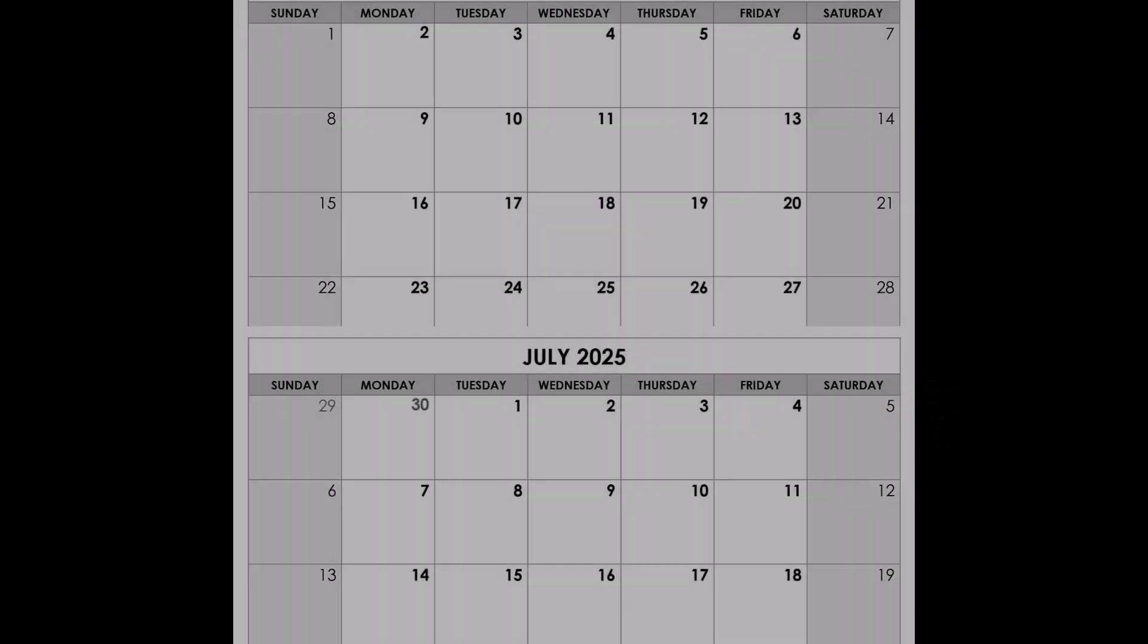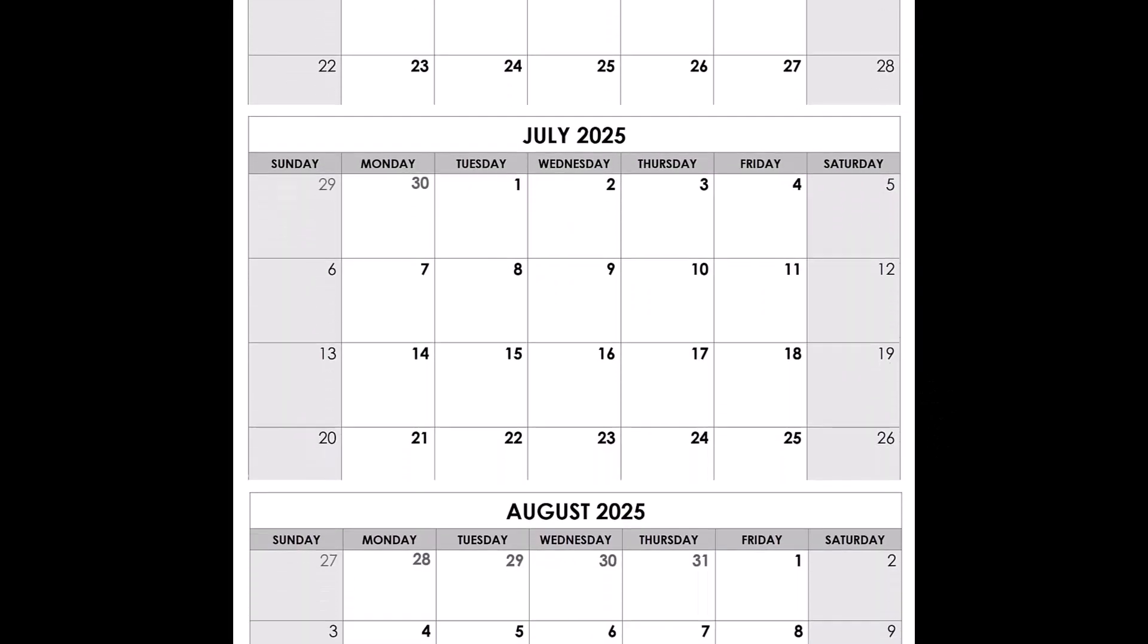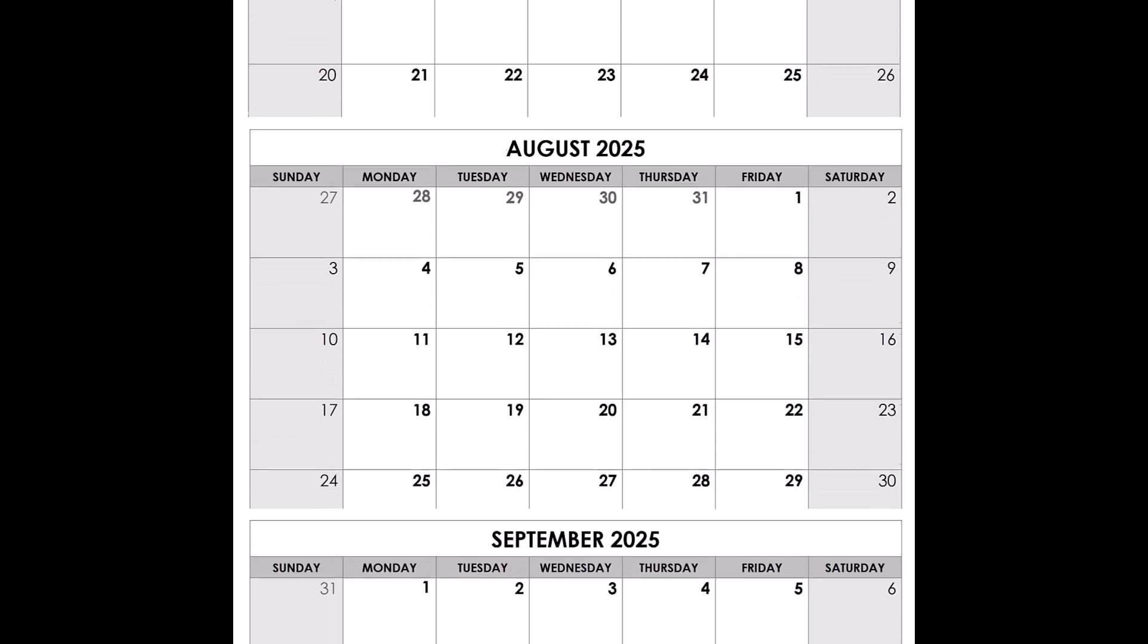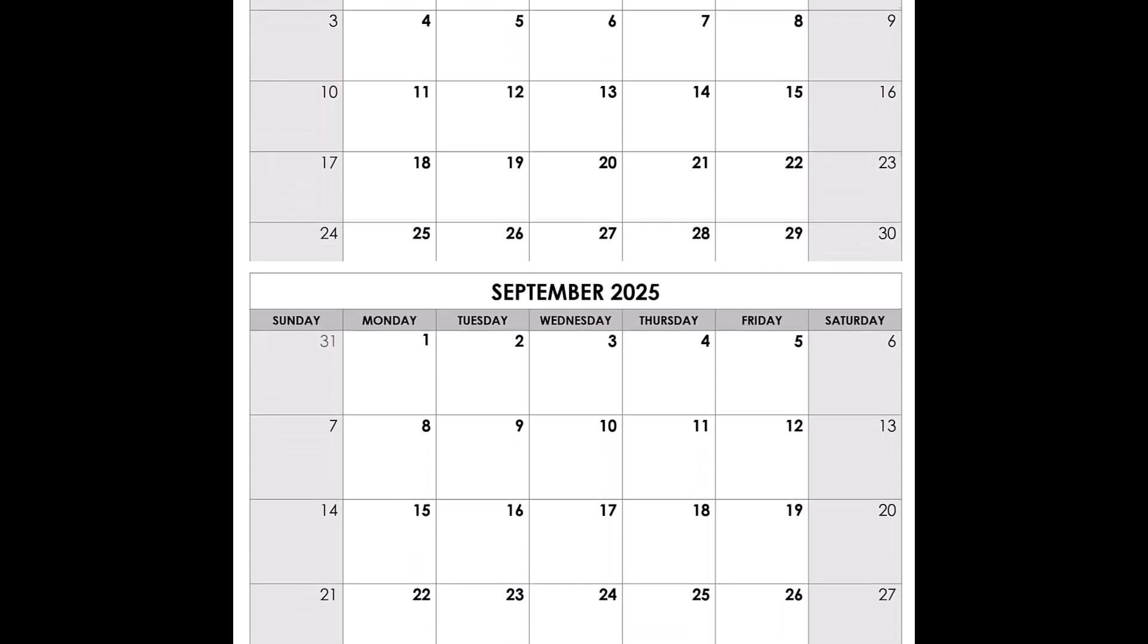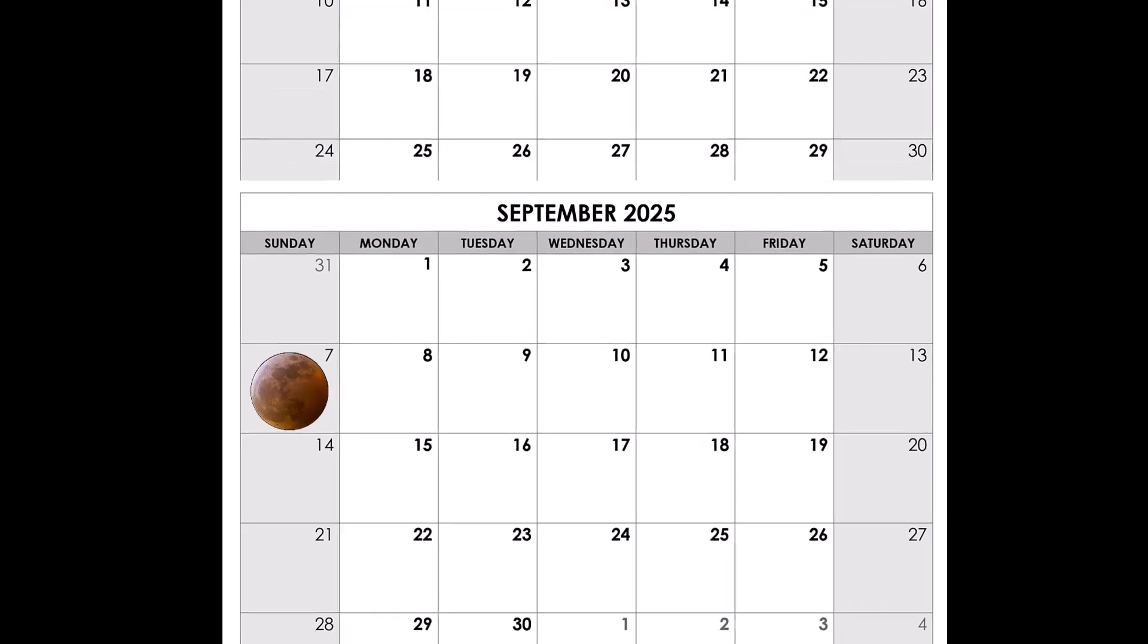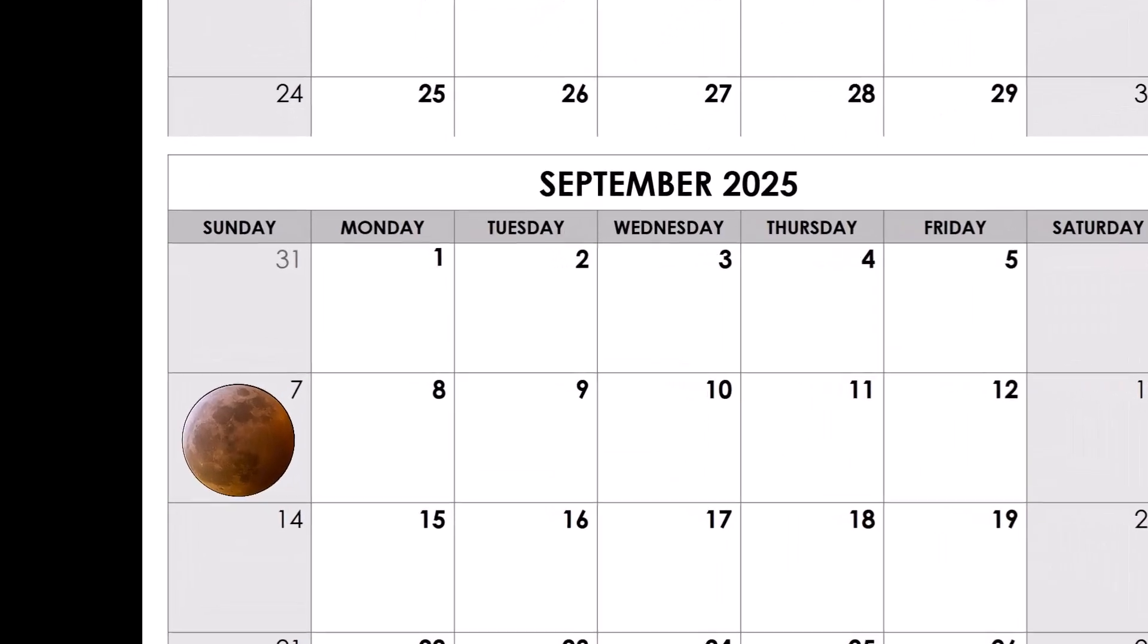Moving on, there'll be no eclipse of any kind anywhere during the summer months. The second total lunar eclipse of 2025 is on September 7th, and this time Asia is the place to be.